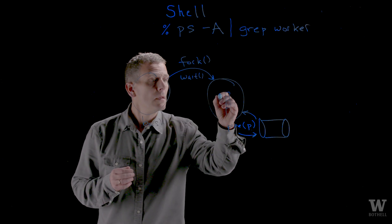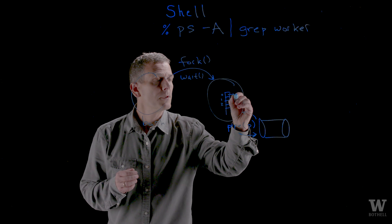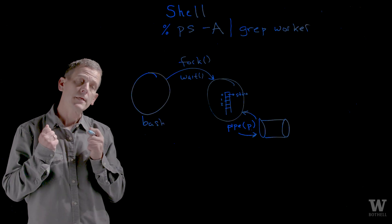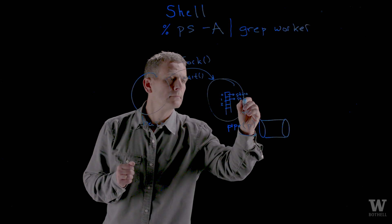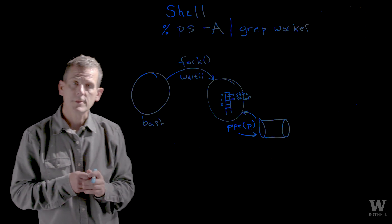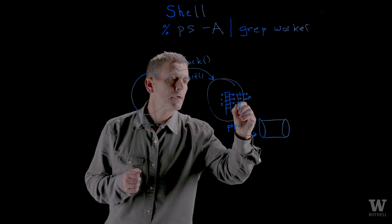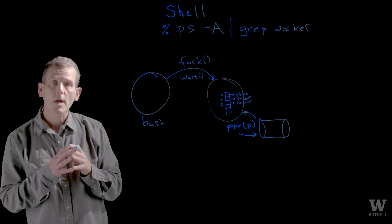So 0, 1, and 2. 0 points to standard in. That's where the process reads text. 1 points to standard out. That's where a process writes text. And then 2 points to standard error. This is where errors are written.